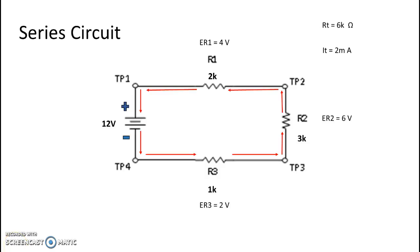Welcome back everyone. Here we see the same series circuit that we did the calculations for in the last video. For simplicity, I've already put the numbers up here for total resistance of 6k ohms and current of 2 milliamps, and the voltage of R1 which is 4 volts, the voltage of R2 which is 6 volts, and the voltage of R3 which is 2 volts.